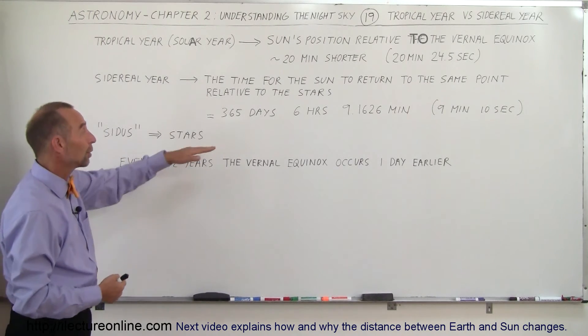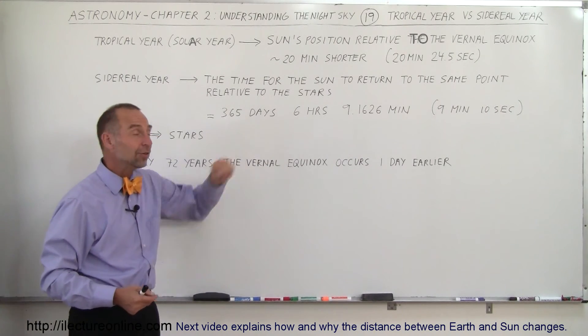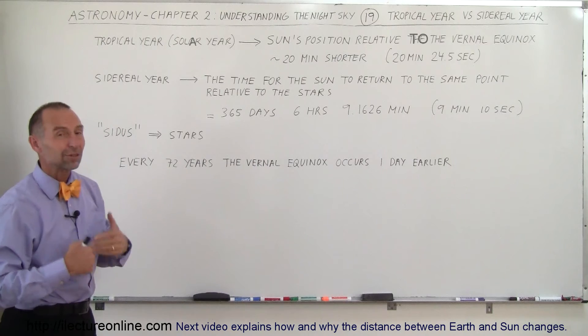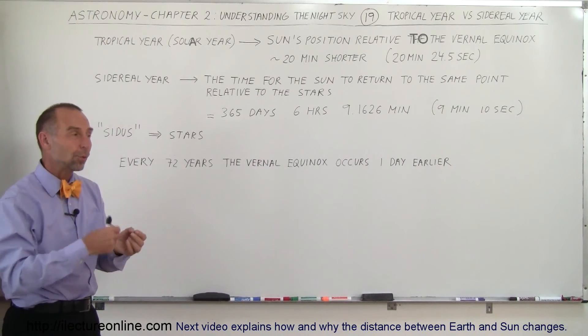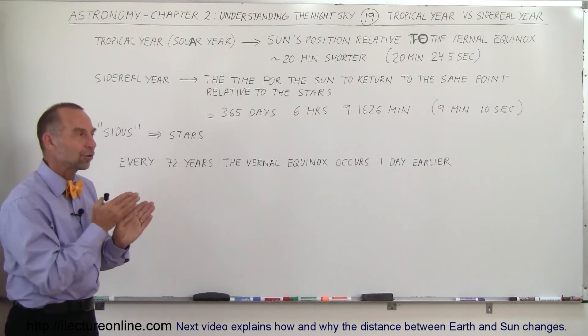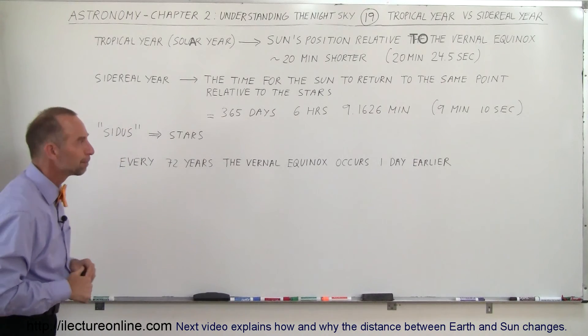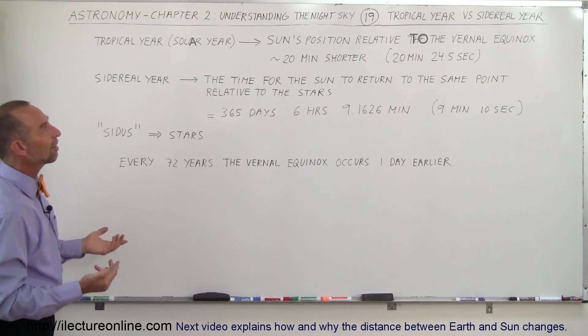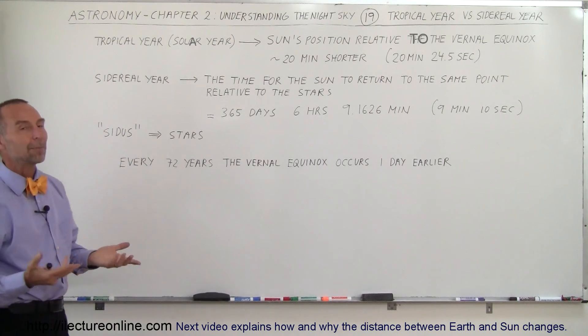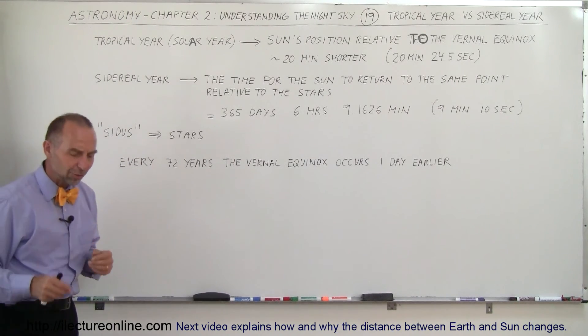We add an extra day every 4 years to account for the additional 6 hours. And then every century or so we have to make a further calendar adjustment to make sure our winters and summers don't get exchanged over time. That's the difference between a tropical year and a sidereal year.